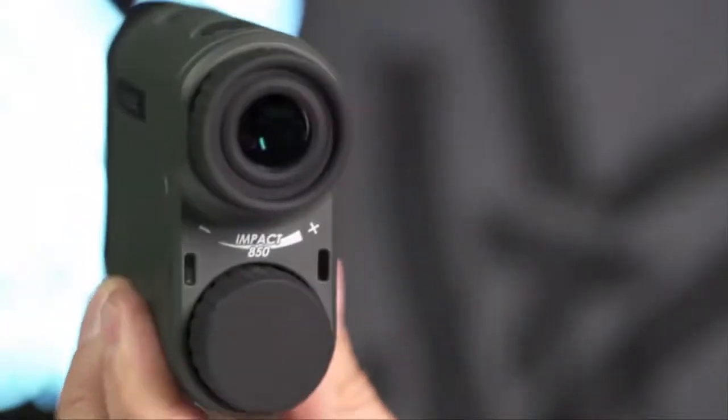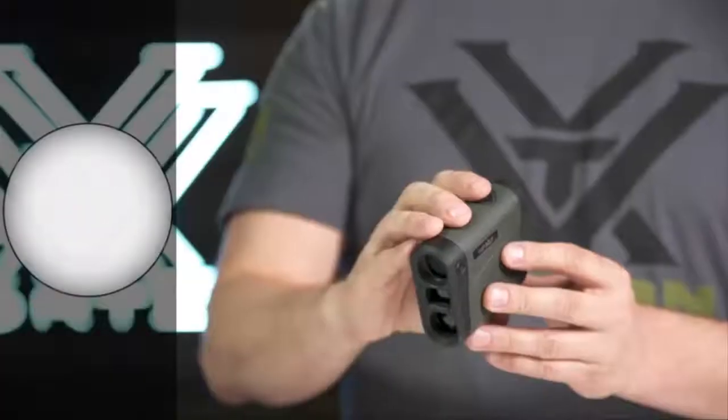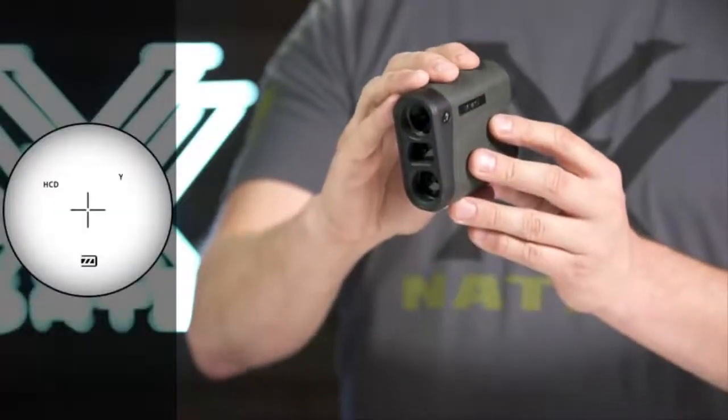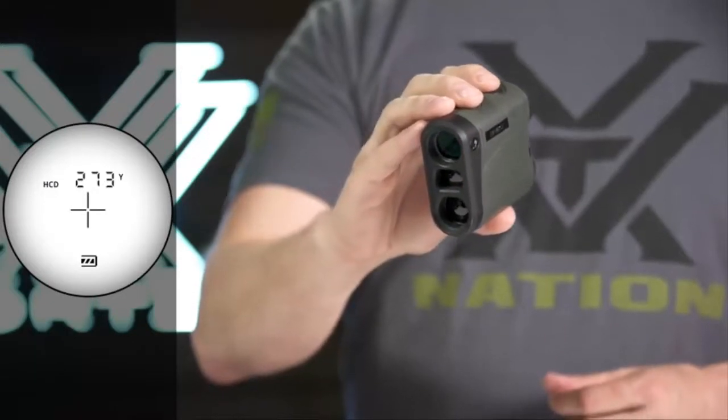The primary HCD mode displays an angle compensated distance that is ideal for the majority of hunters and shooters. An advanced LOS mode provides the option to calculate long distance, high angle shots with increased precision.